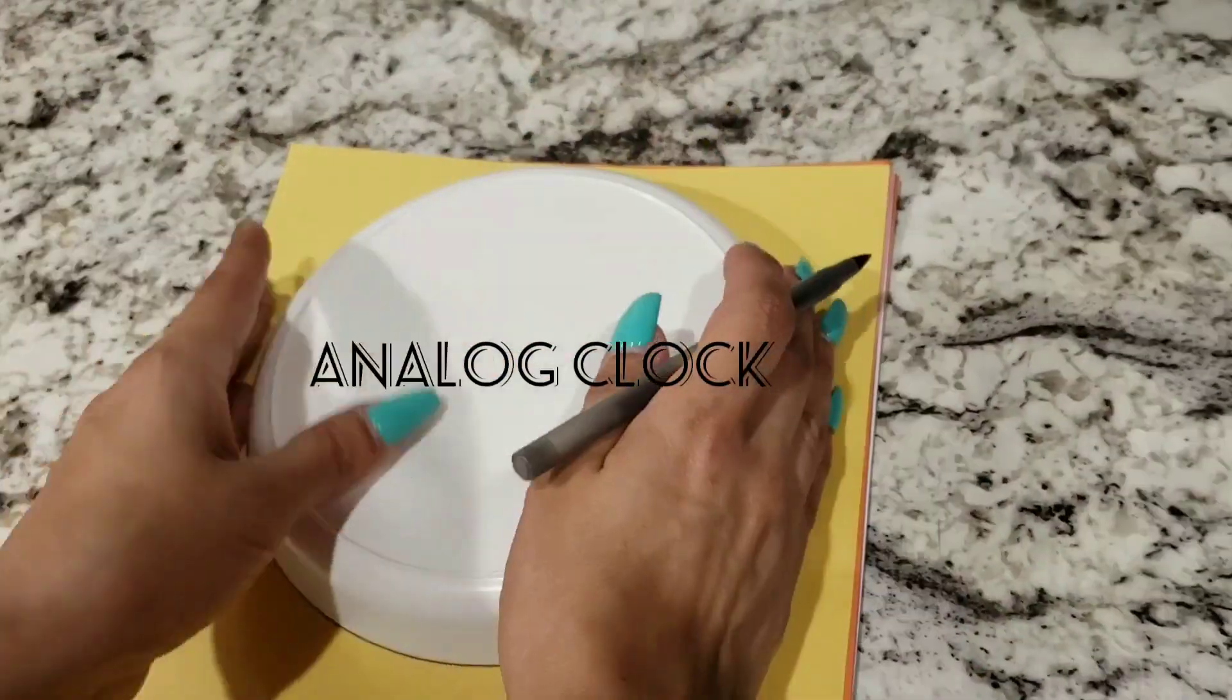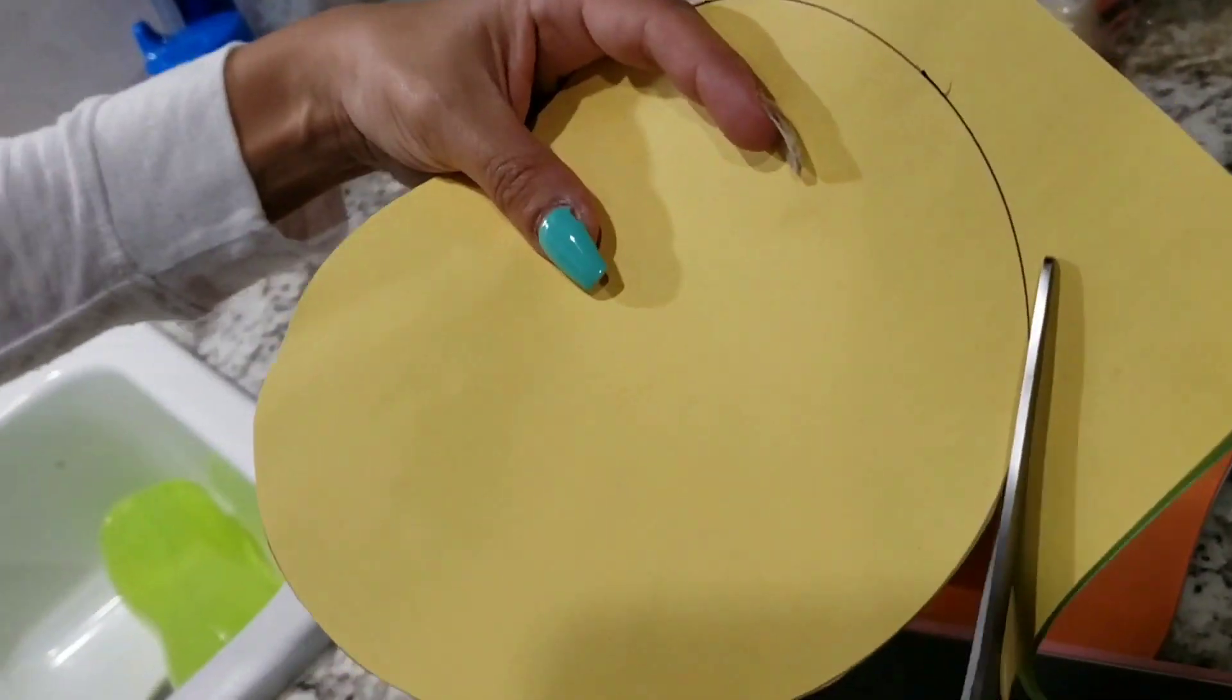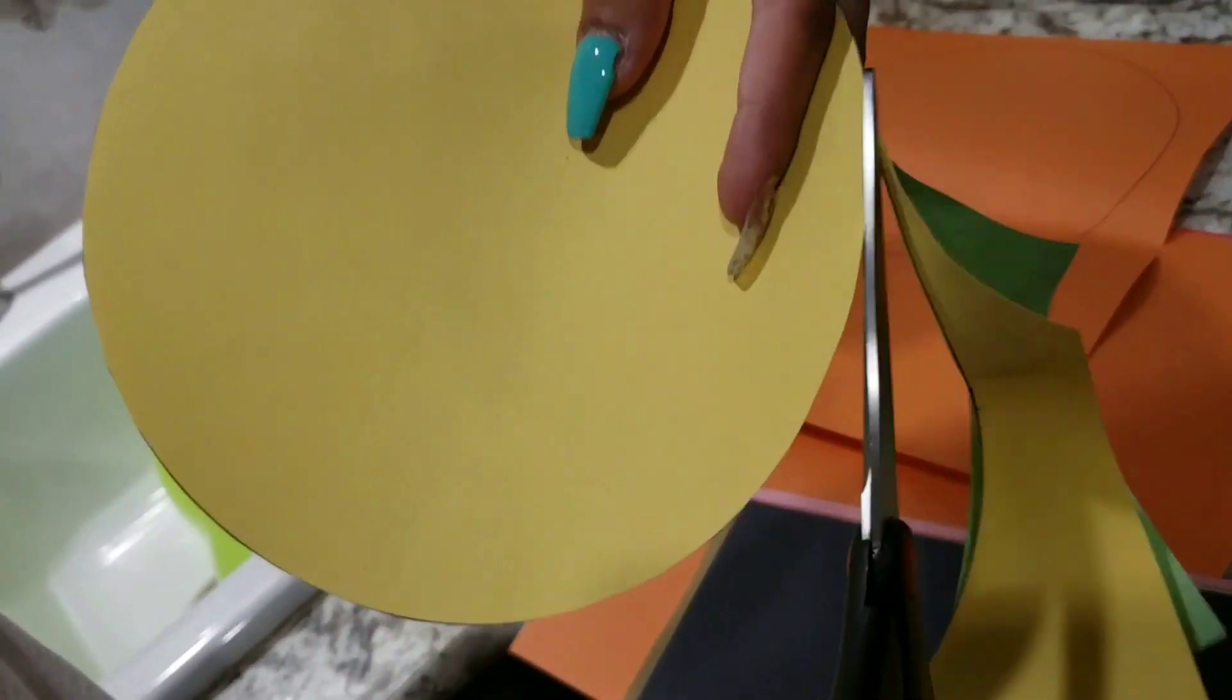Let's make our personal clock. First use a plate to trace the circle and then use scissors to cut it out.